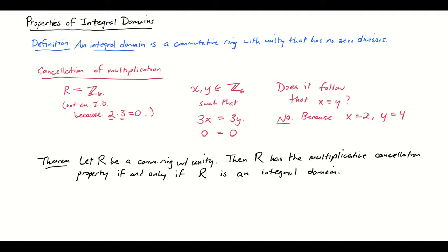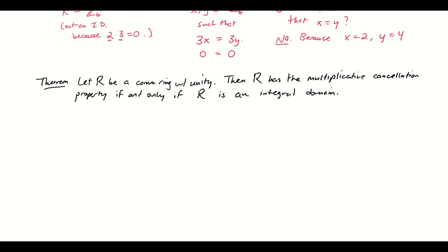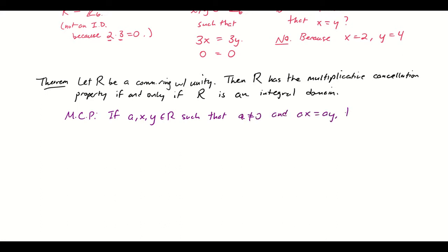We're going to prove that. The multiplicative cancellation property is: if a, x, and y are in R such that a is non-zero and ax equals ay, then x equals y. We will show that integral domains satisfy this and non-integral domains do not satisfy this.